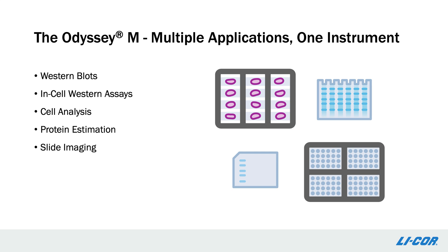To answer this question, you would need a plate reader, film and a darkroom, and a high-powered microscope. These instruments might all be available to you, but in other labs or even across campus. What I hope to show you today is that with the Odyssey-M, you no longer need to have multiple instruments to perform these experiments. Odyssey-M's many channels not only allow us to improve upon two of our staple experiments — the western blot and the in-cell western assay — but it also allows us to perform many new assays, including cell analysis, protein estimation, and slide imaging, among others.